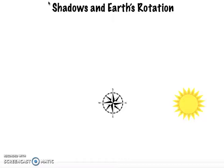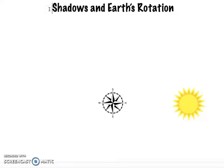It just looks like the sun is moving because Earth is rotating. And as Earth is rotating on its axis, it's also moving or revolving around the sun. Now we're going to see how the sun's apparent movement in the sky helps create shadows.